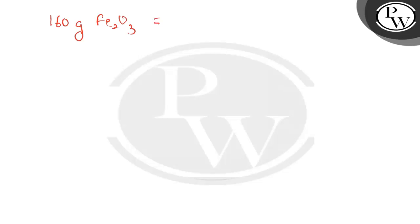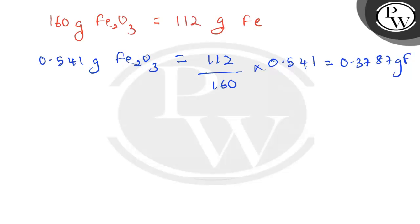So 0.541 gram of Fe₂O₃ will contain 112 divided by 160 multiplied with 0.541, which equals 0.3787 gram Fe.